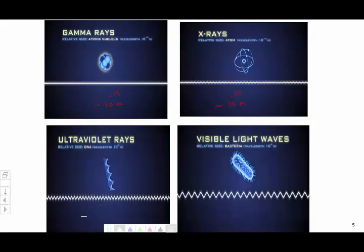The ultraviolet radiation is in the range of DNA, with wavelengths in the range of DNA size, which would be 10 to the power minus 6 meters. And lastly,